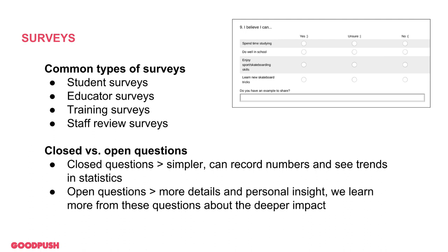One of the most popular examples of MEL — and probably one you've come across many times — is surveys. At Skateistan, common surveys include student surveys happening at least once a year, asking all kinds of questions about the experience students have been having and what they're getting out of programs. An example from a past Skateistan survey relates to confidence — seeing how self-confident students are in themselves, measured over time. Another common type is educator surveys, asking those who teach about how different programs are running and which ones students are most excited about.